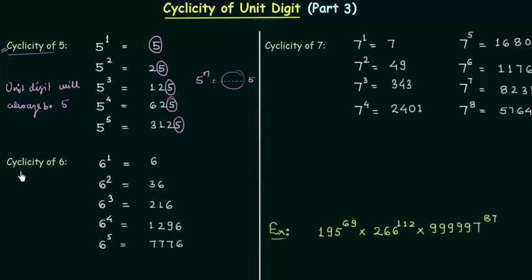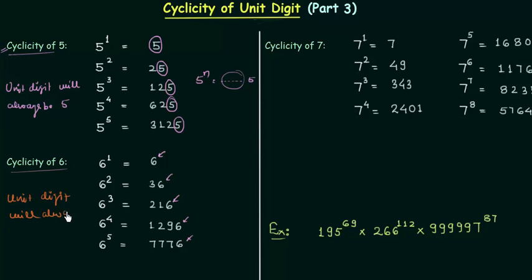In the same way, for cyclicity of 6, if you see these numbers you will find 6 every time. So we can simply say the unit digit will always be 6. Cyclicity of 5 and 6 are pretty simple — we always have 5 and 6 at the unit place.